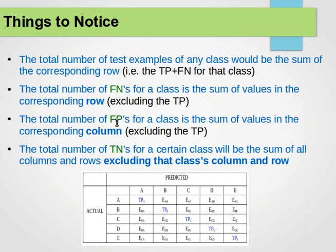The number of false positives for a class is the sum of values in the corresponding column without the true positive. So if I want the number of false positives for class C, I sum the values in column C excluding the diagonal value. If you see this represented with a sigma sign, summing from i to j, that sum excludes the true positive value on the diagonal.